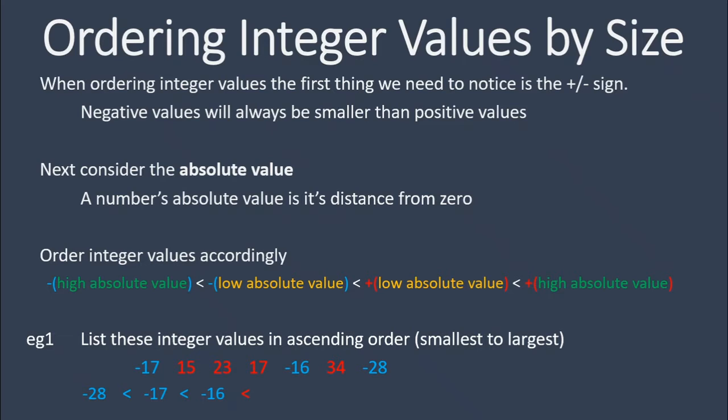And all of these negative numbers will always be less than any positive number. So looking at our positive integers, the smallest will be the one with the lowest absolute value. So our next number will be 15, then 17, then 23, then 34. Easy, right?